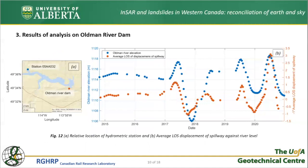Hydrometric data from a nearby station measuring the level of the Oldman River were downloaded from the Government of Canada website. The ascending line-of-sight displacement of all points on the spillway were averaged, shown in a diagram where red and blue points mark displacement and river level respectively. An autocorrelation test was performed to find out how much the displacement diagram should be shifted until maximum similarity in trends is achieved. With almost 13 days' latency, the average displacement of the spillway responds to seasonal variations in river level very clearly.